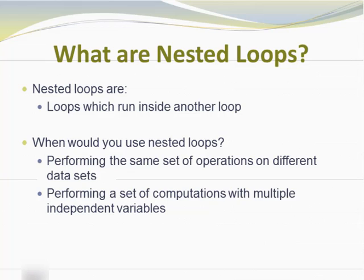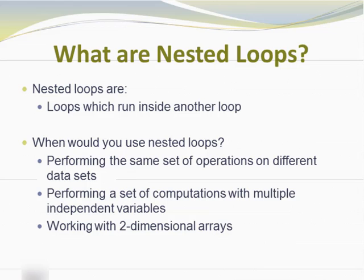You may have a set of computations where you're using multiple independent variables — for instance, in a situation where you're trying to determine what effect different variables have on some type of computation, model, or simulation. You would have a different loop that changes the value of different variables so you can test all possible input variable values. The most common use case, which is why we're talking about nested loops now, is when you're working with two-dimensional arrays.